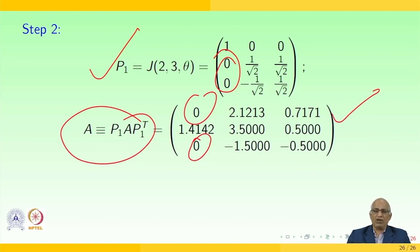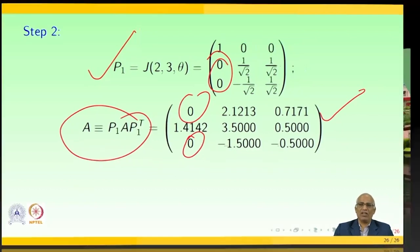In summary, what we learned today is that the Householder transformation is effective in handling Hessenberg reduction. Especially when the matrix is symmetric, we can take advantage of symmetry to reduce the flop count, thereby achieving good convergence and the best approximation. Thank you very much for listening to this class today.